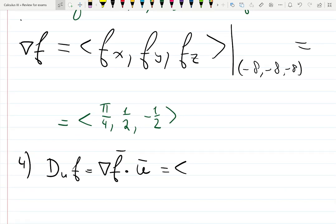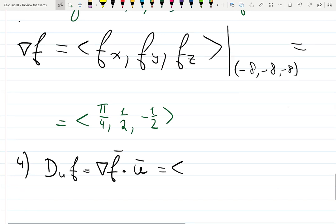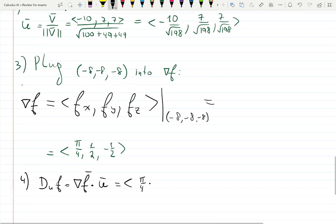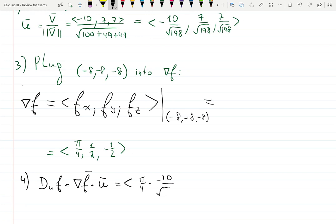It's a dot product if you want this name. It's going to be pi over 4 times minus 10 over square root of 198, plus 1 half times 7 over square root of 198, plus minus 1 half times 7 over square root of 198.